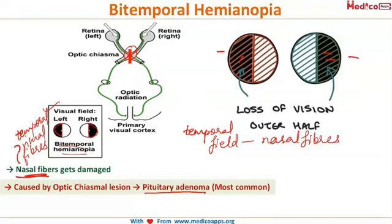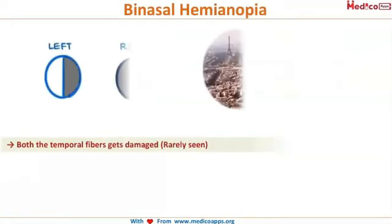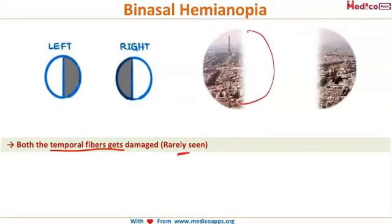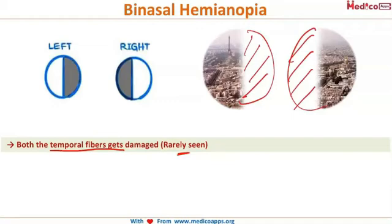Now let's look at binasal hemianopia — the opposite of bitemporal. We understand that both temporal fibers will be damaged. However, these temporal fibers do not cross or come close to each other from both sides, so any lesion causing temporal fiber damage on both sides is very rare. Therefore, binasal hemianopia — where the nasal visual field is lost — is very rare.